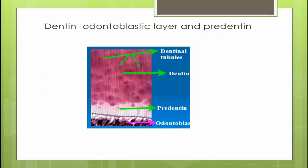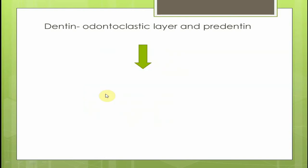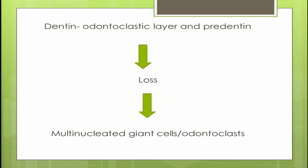Usually the dentine is lined internally from the pulpal surface by an odontoblastic layer and a predentine. These two layers together form a barrier and prevent resorption, whereas loss or alteration of this layer will be followed by an invasion of the pulp by multinuclear giant cells or odontoclasts, and these odontoclasts cause resorption of the dentine from within.